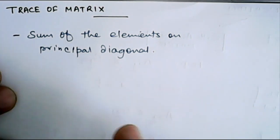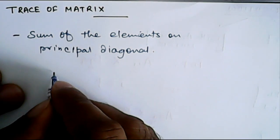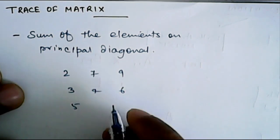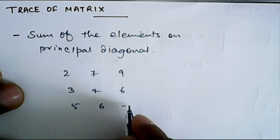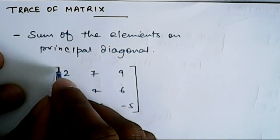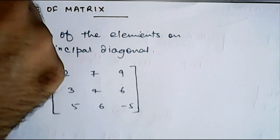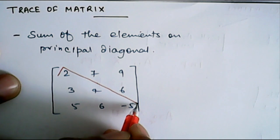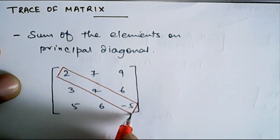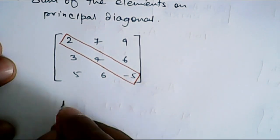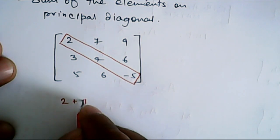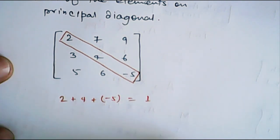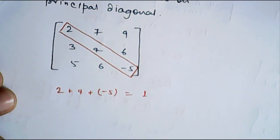So let's consider a matrix: 2, 7, 9, 3, 4, 6, 5, 6, minus 5. So the trace is the sum of this element. It will be equal to 2 plus 4 plus minus 5 which is equal to 1. So this is the trace of matrix.